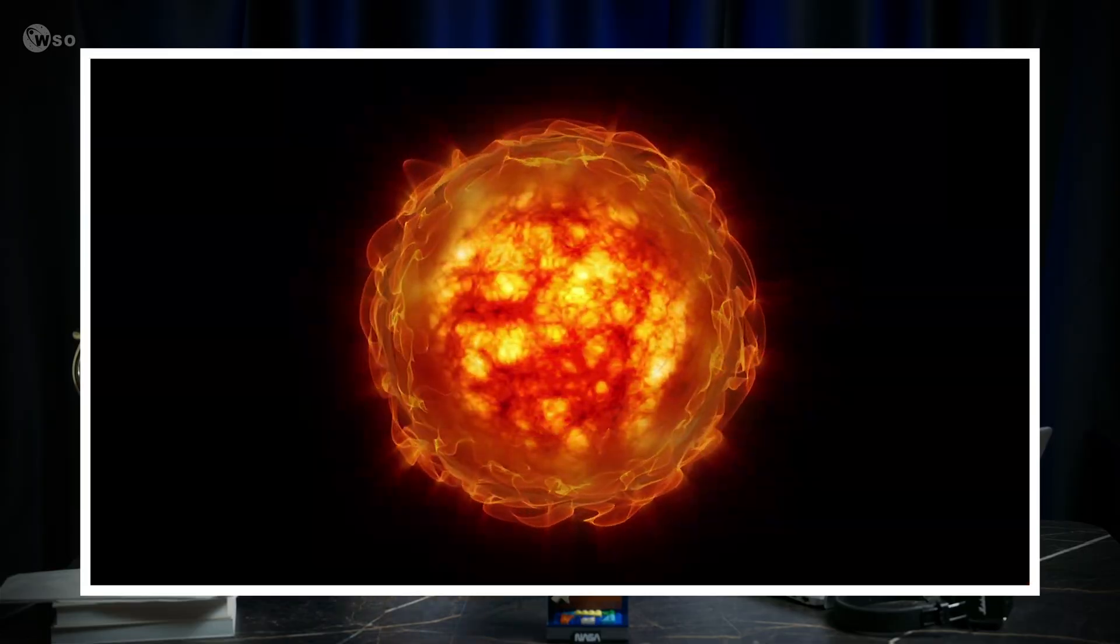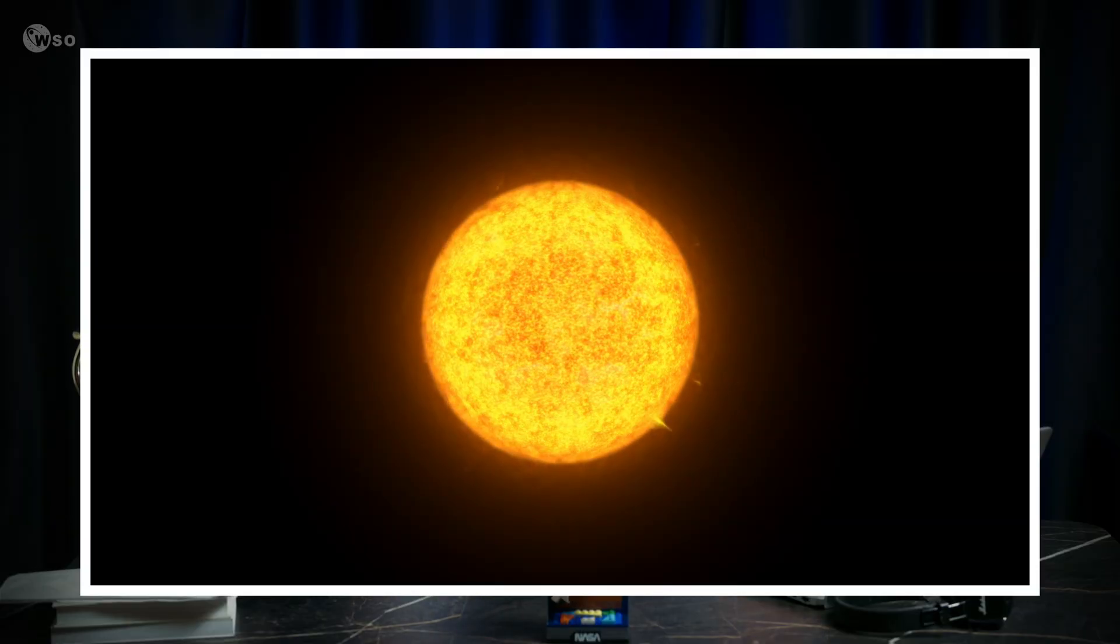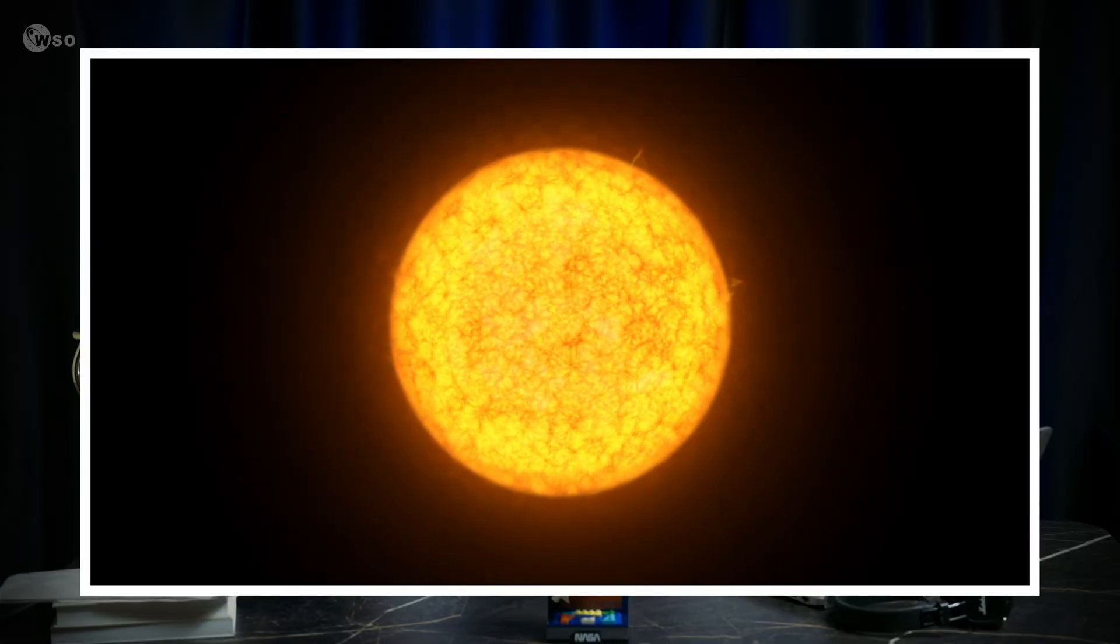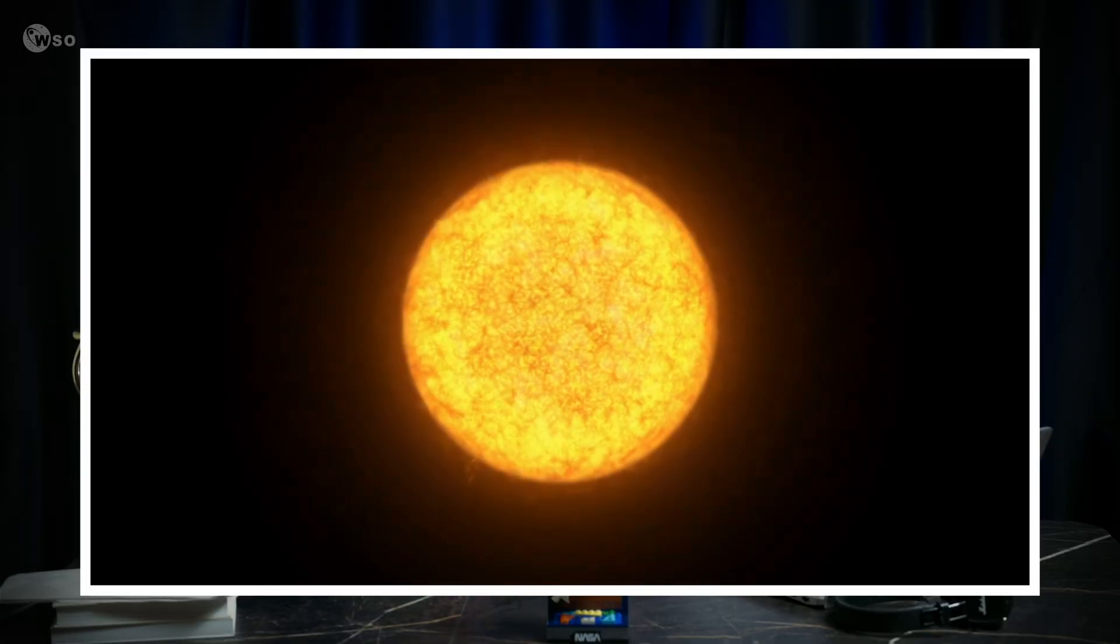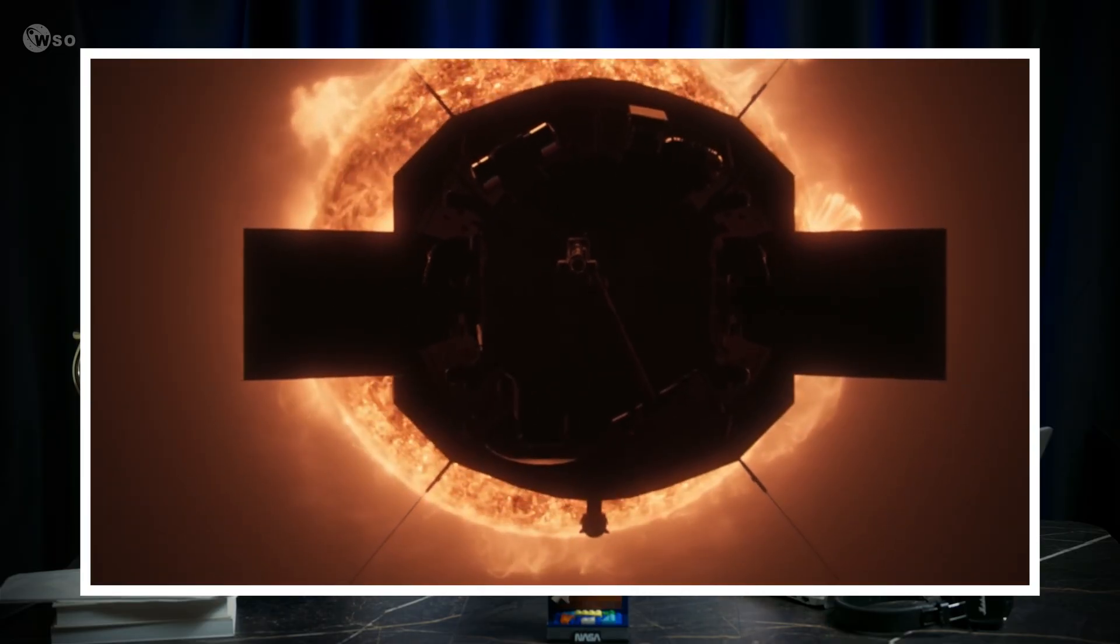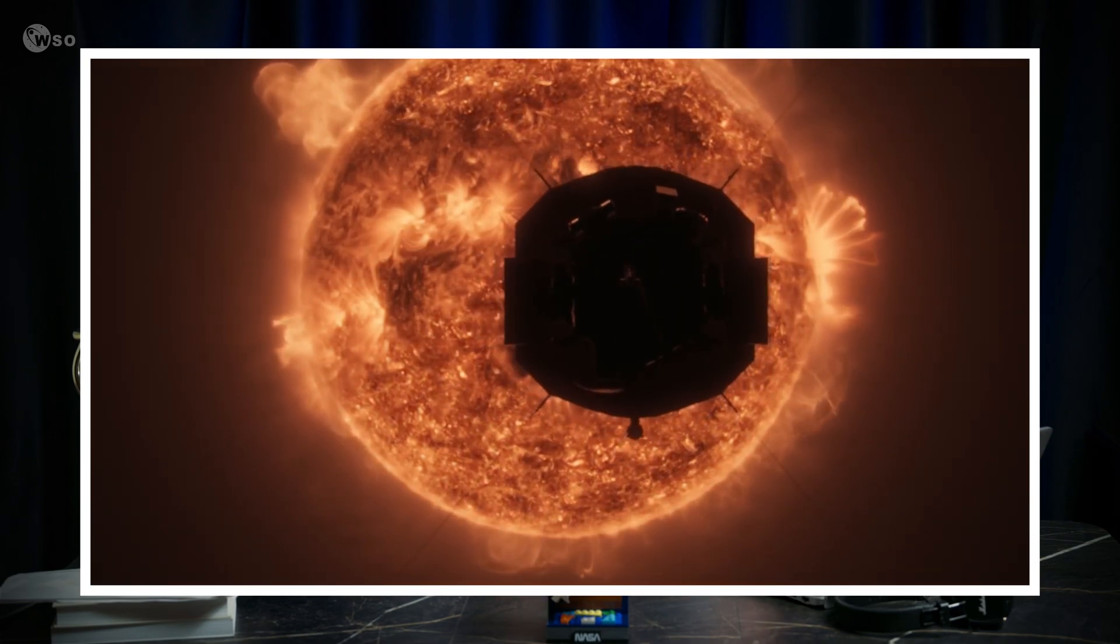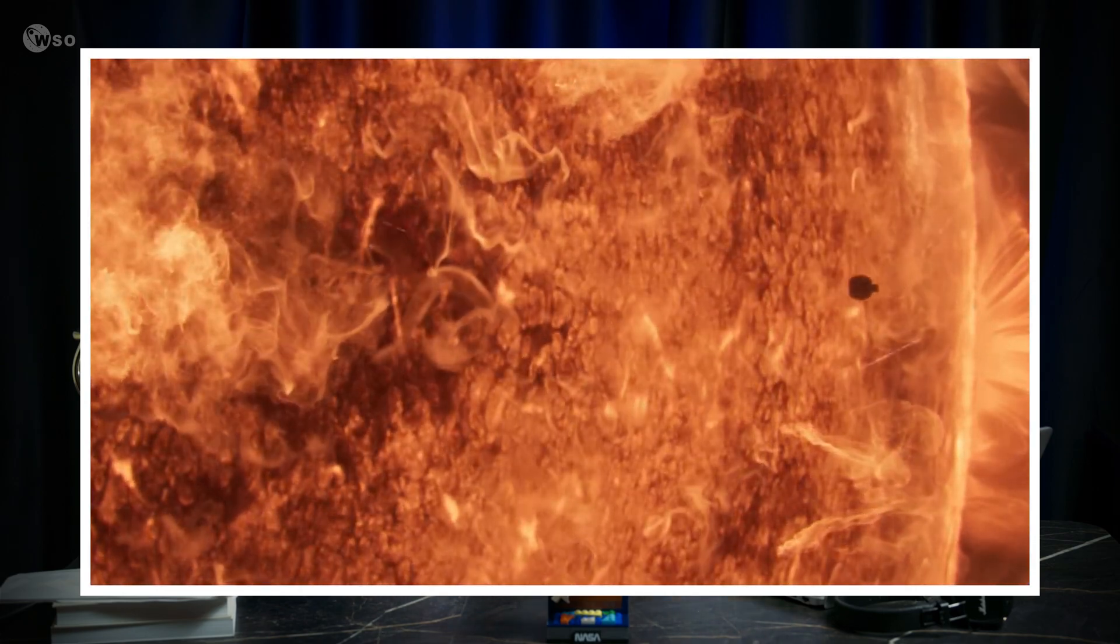But the real problem is that red supergiants don't actually have a sharp surface. The outer layers are extremely diffuse, a gradual fade from hot gas into vacuum. The photosphere is a moving target, pulsing in and out over time. If you flew a spaceship into the largest star, you wouldn't hit a wall of fire. You would just gradually find yourself in a hotter and hotter haze. They are essentially hot fog.